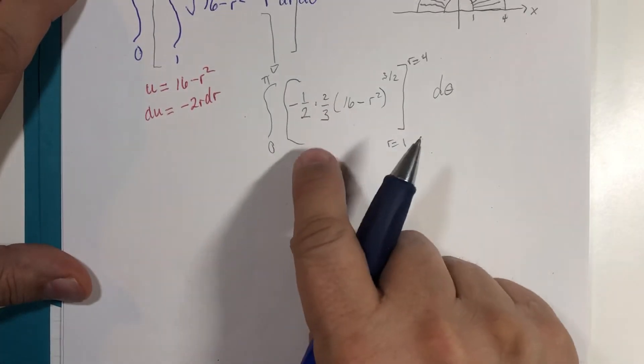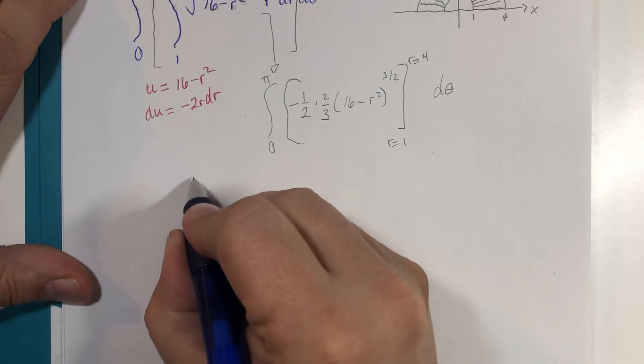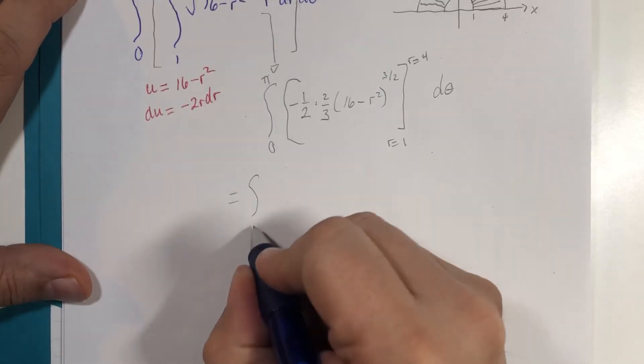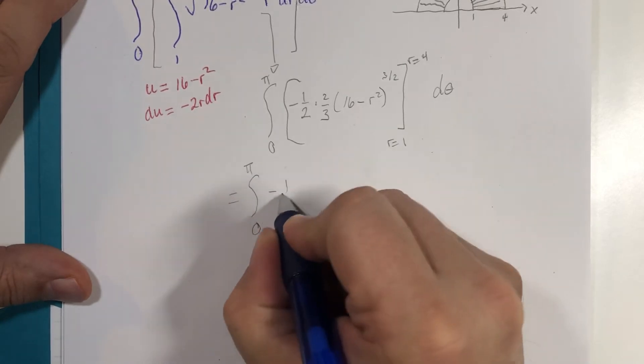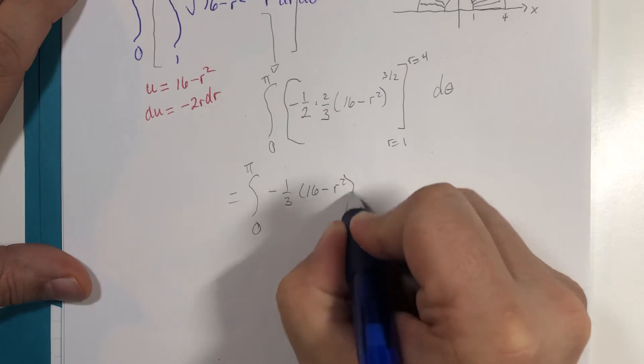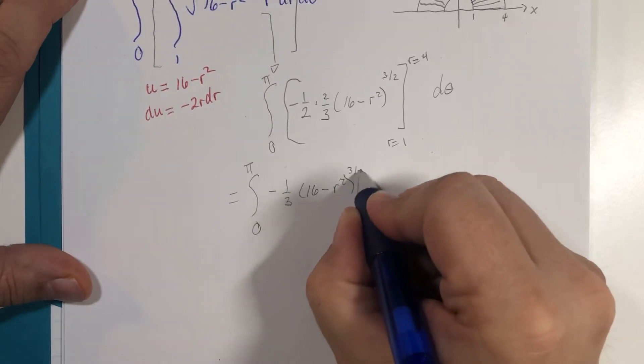Half of two thirds is one third. Let's just do a little bit of cleanup here. Zero to pi, negative one third, 16 minus r squared to the three halves power...